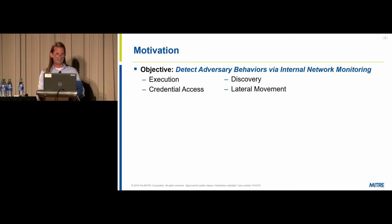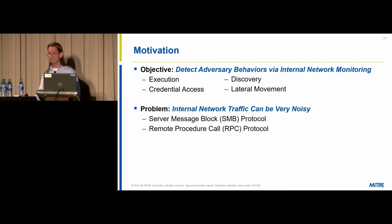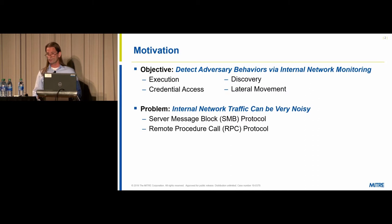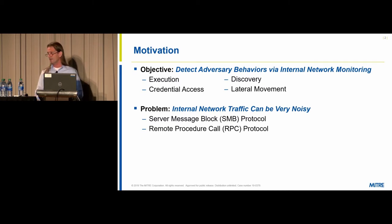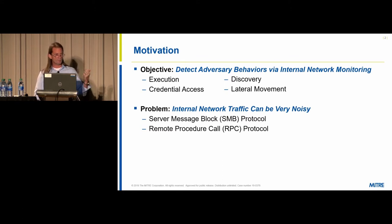Of course, you can have too much of a good thing, and there lies the problem. Internal network traffic can be very noisy — there's so much legitimate authorized activity that it can generate overwhelming volumes of traffic. In a Windows environment, two very common and powerful network protocols are the basis for most user and system administrator activities: the Server Message Block or SMB protocol, which facilitates file and print sharing and mapping network drives, and the Remote Procedure Call or RPC protocol.